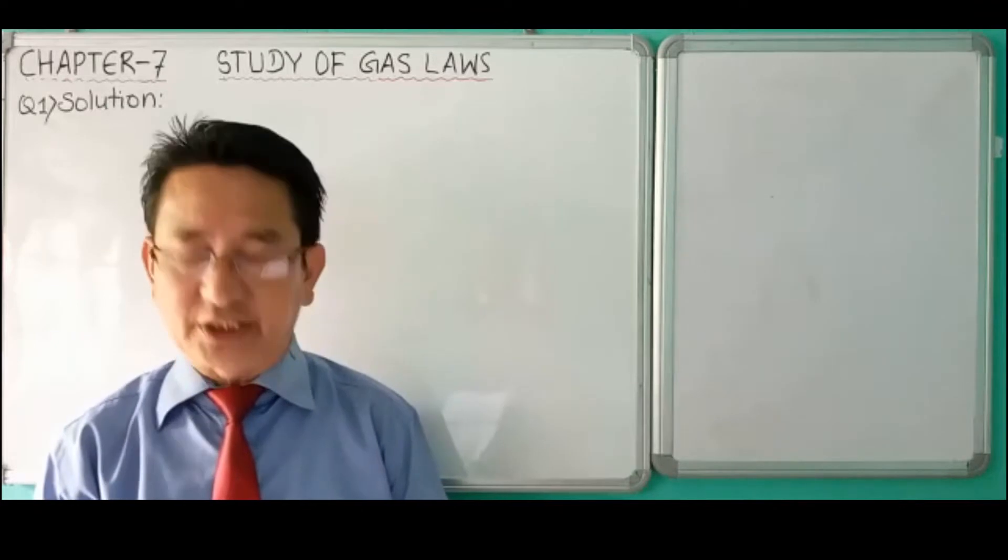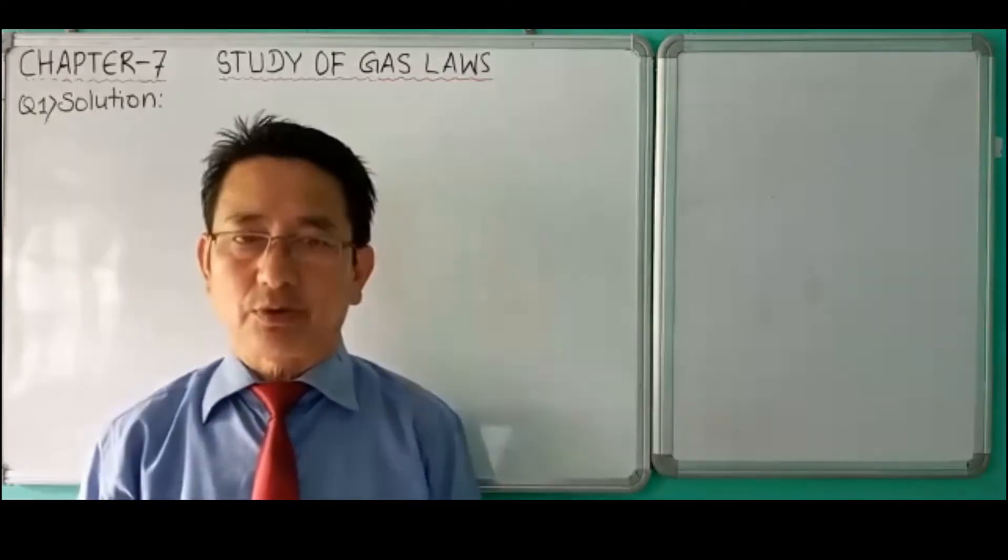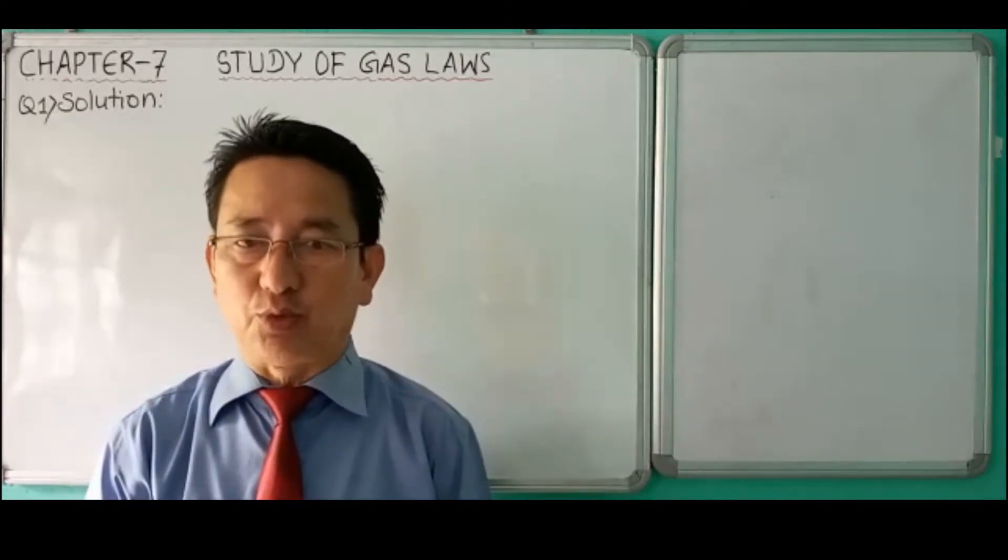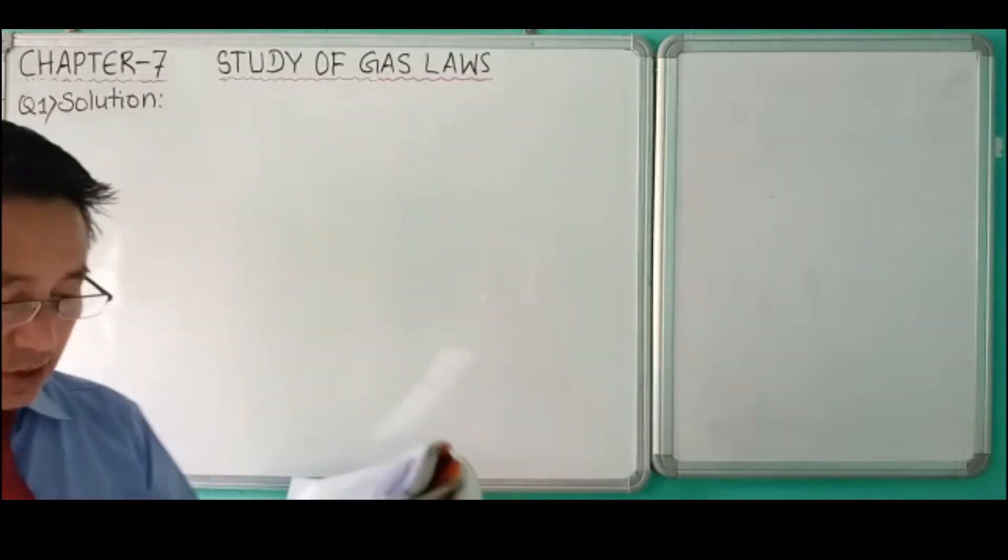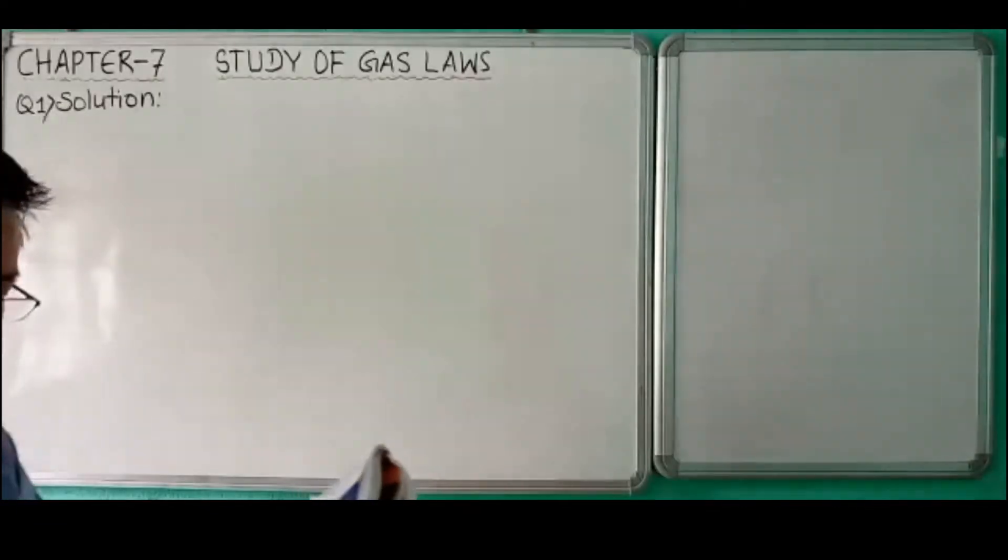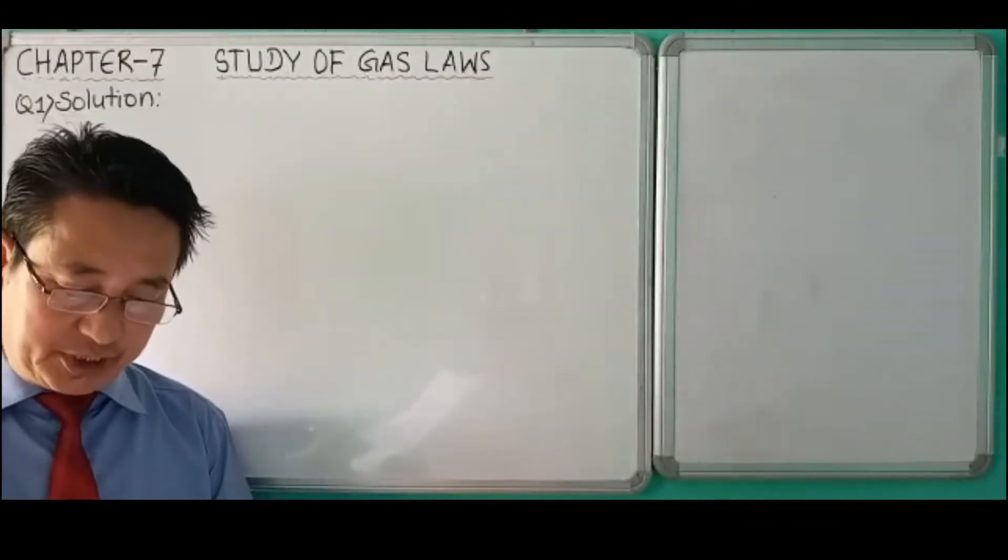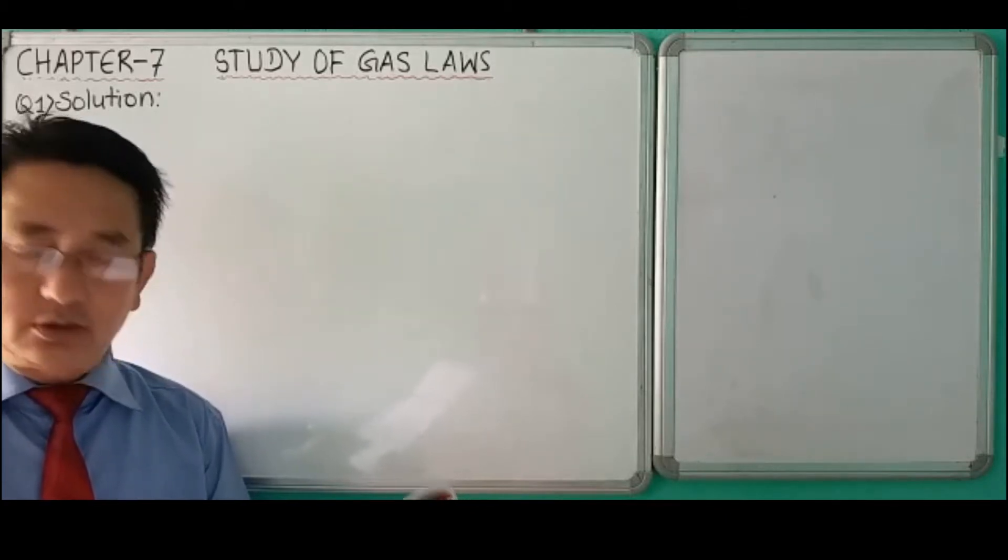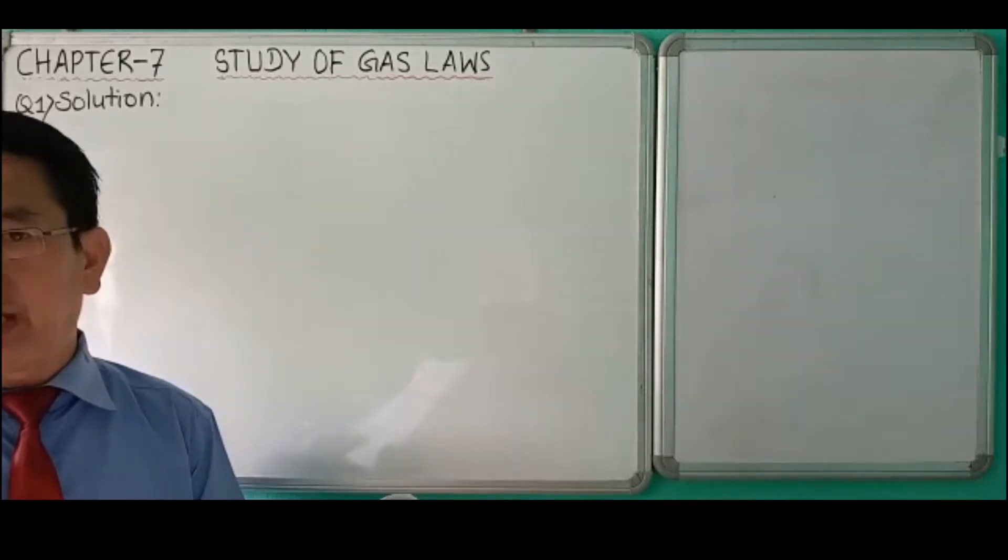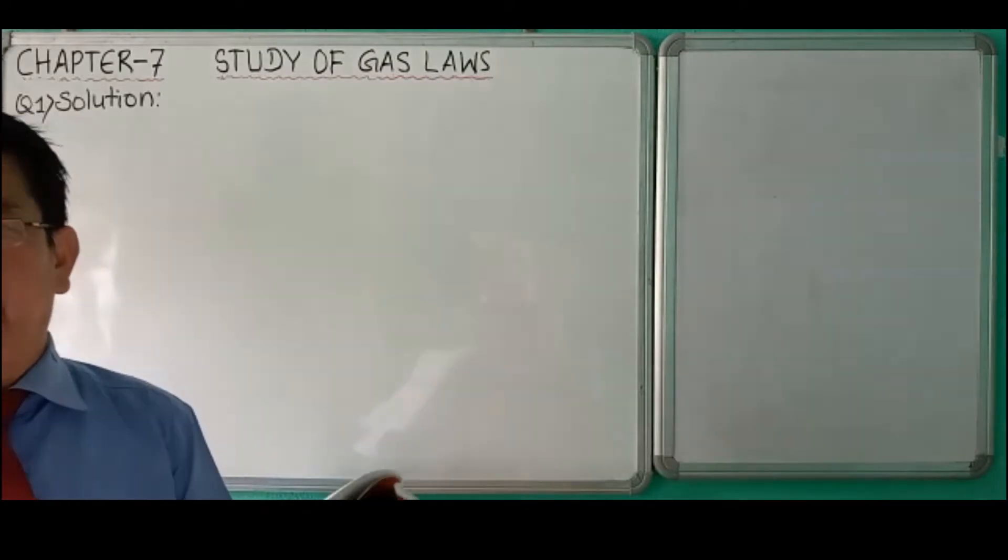For this you can refer to page number 129. We'll solve question number 1 and 2. Question number 1: 150 milliliters of hydrogen gas at 27 degrees Celsius absorbs a pressure of 150 millimeters of mercury.